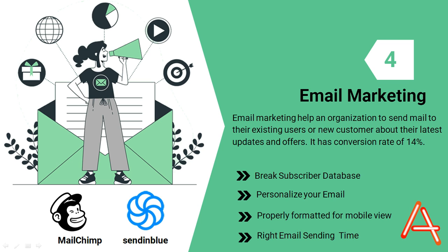The first step to successful email marketing is to segment your subscriber database into different groups based on their interests and behaviors. By segmenting your database, you can create targeted email campaigns that are more likely to resonate with your audience. For example, you can segment your database by age, gender, location, interests, and more. This will help you tailor your email content and ensure that your messages are relevant to your audience.